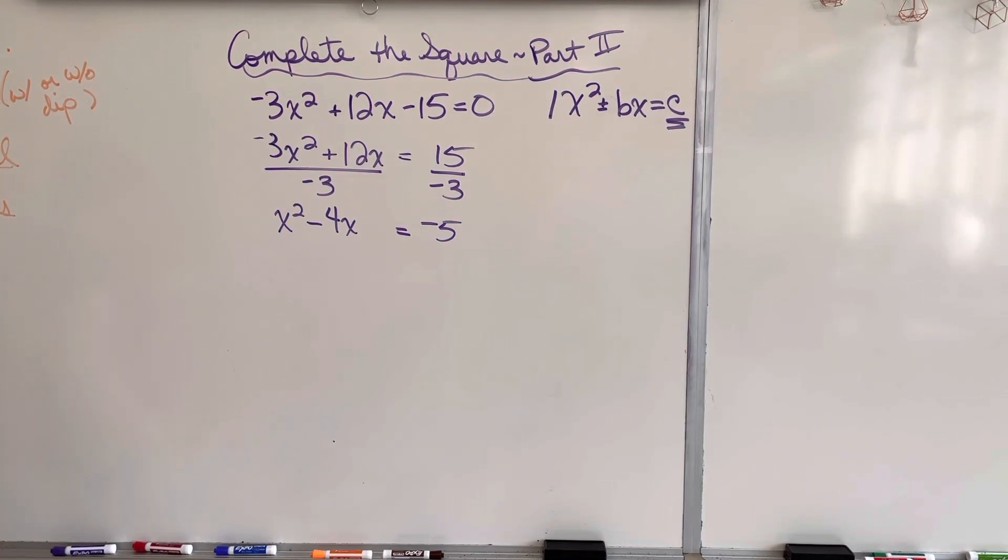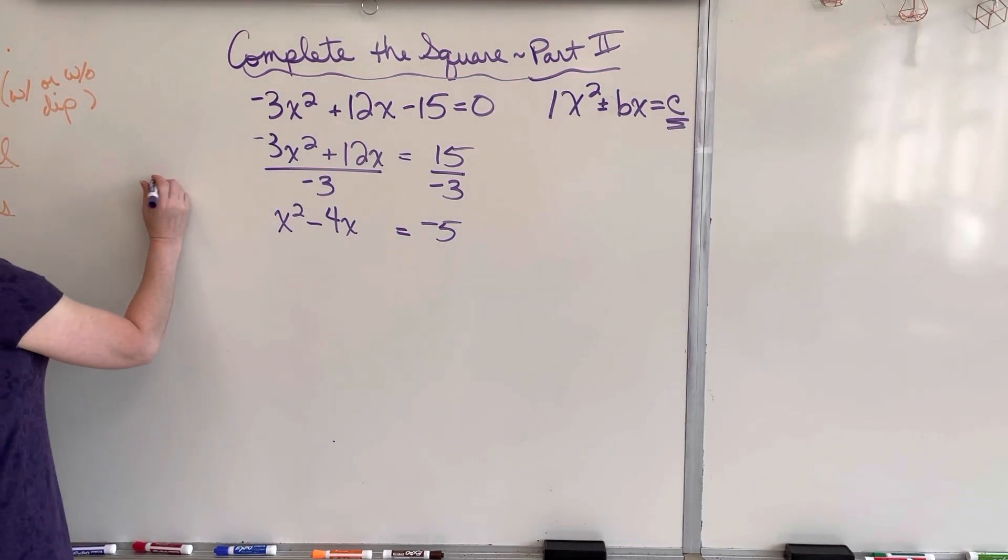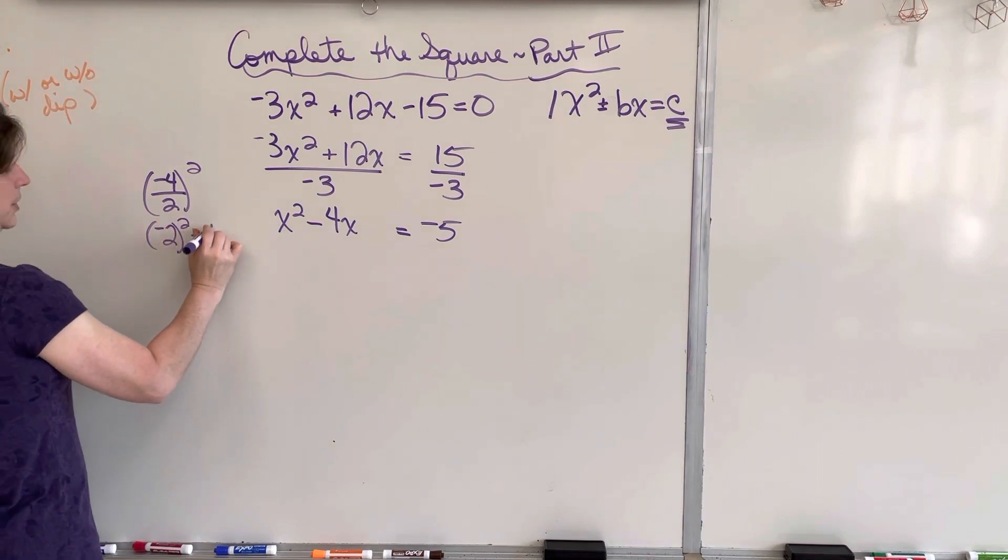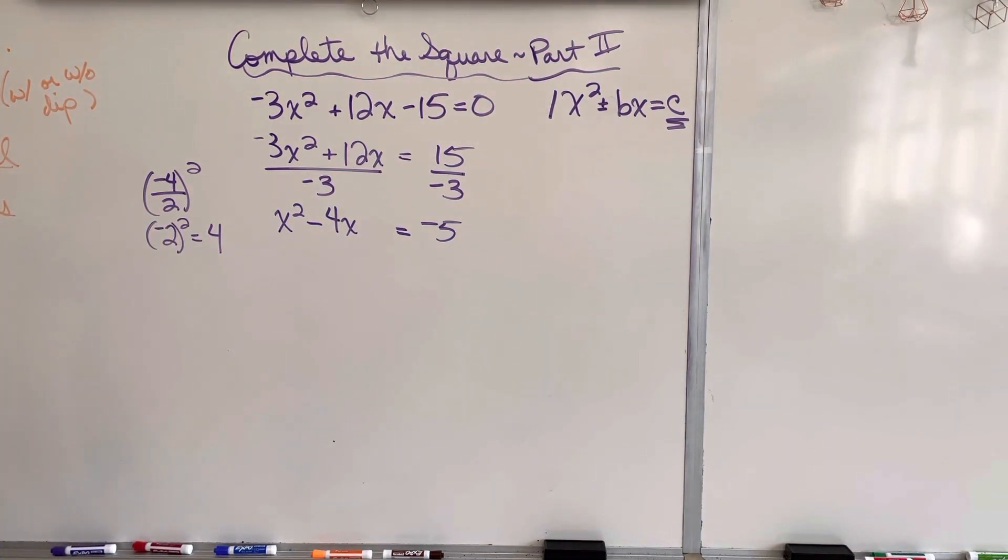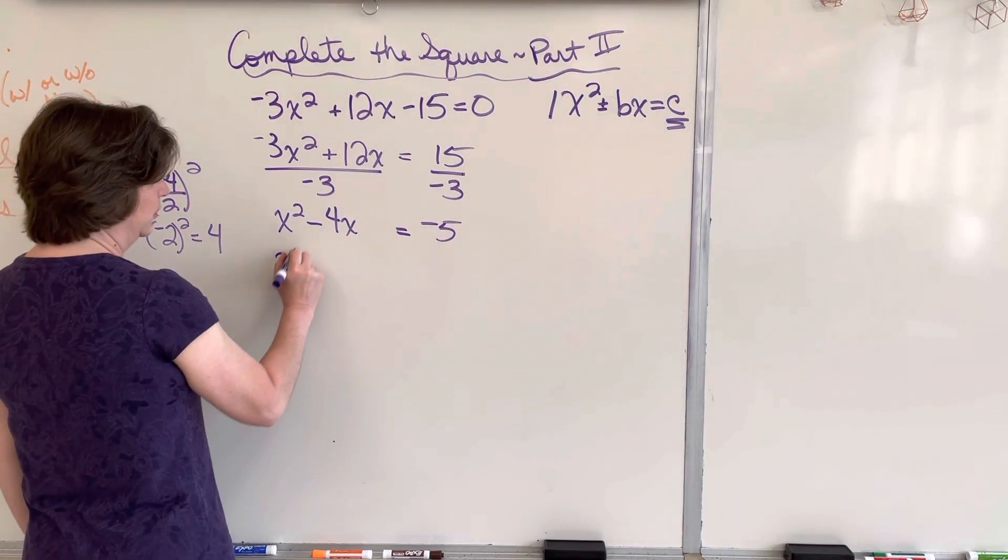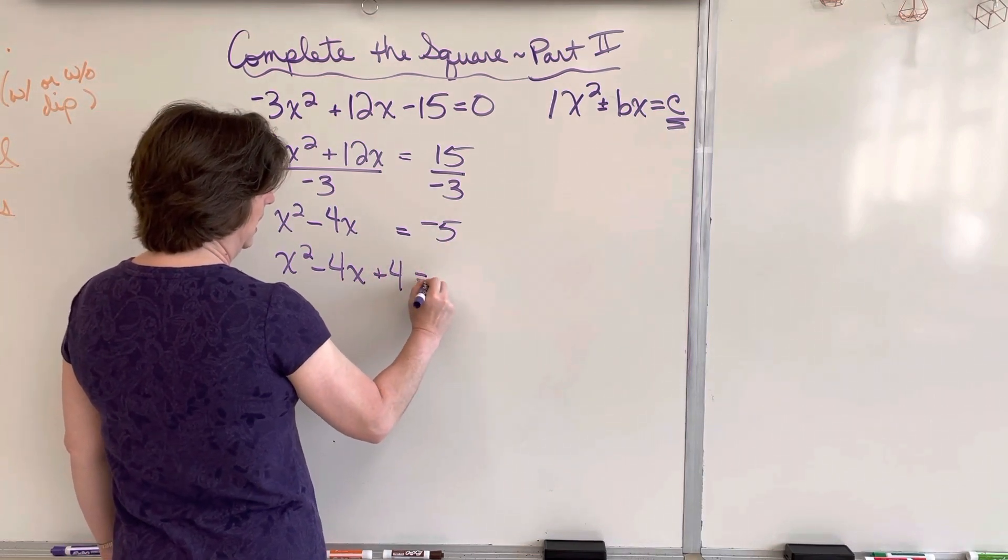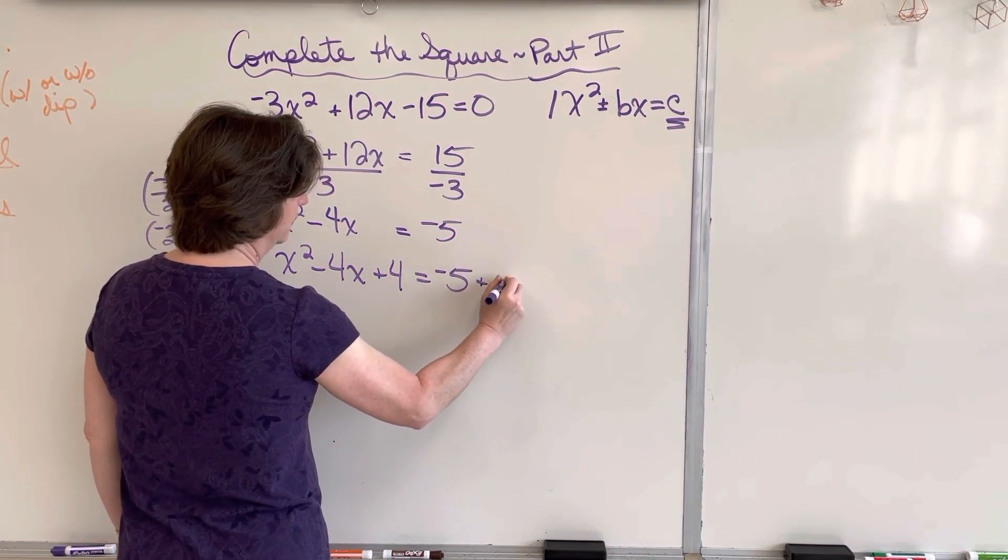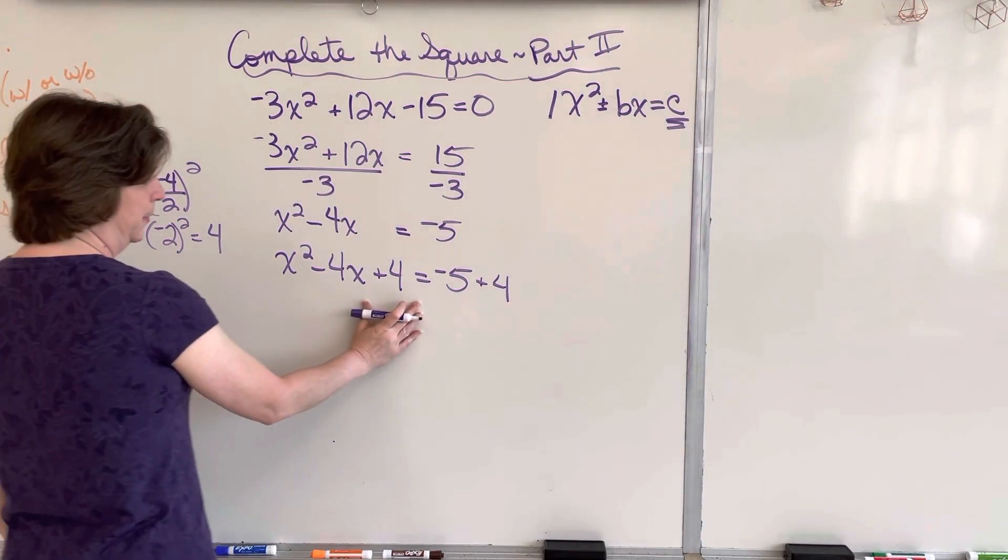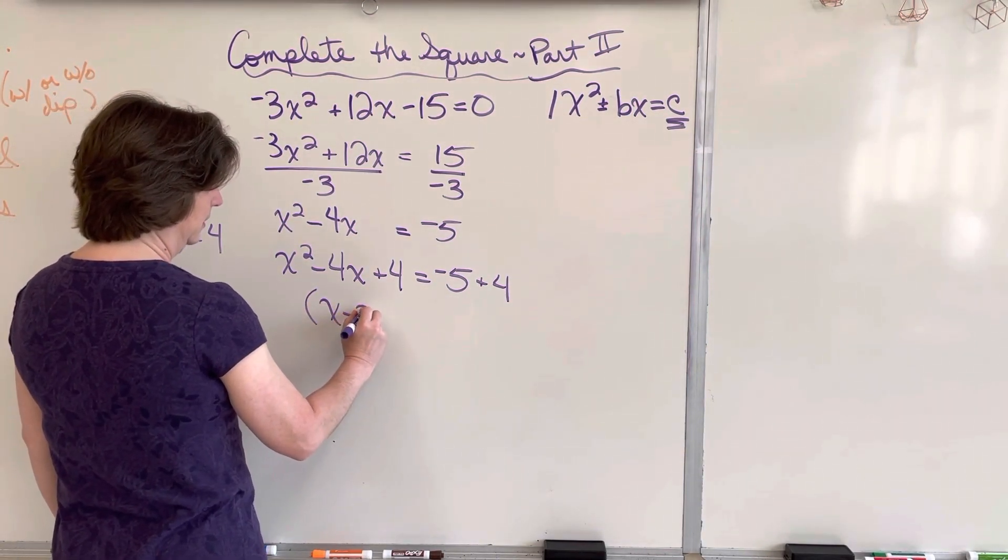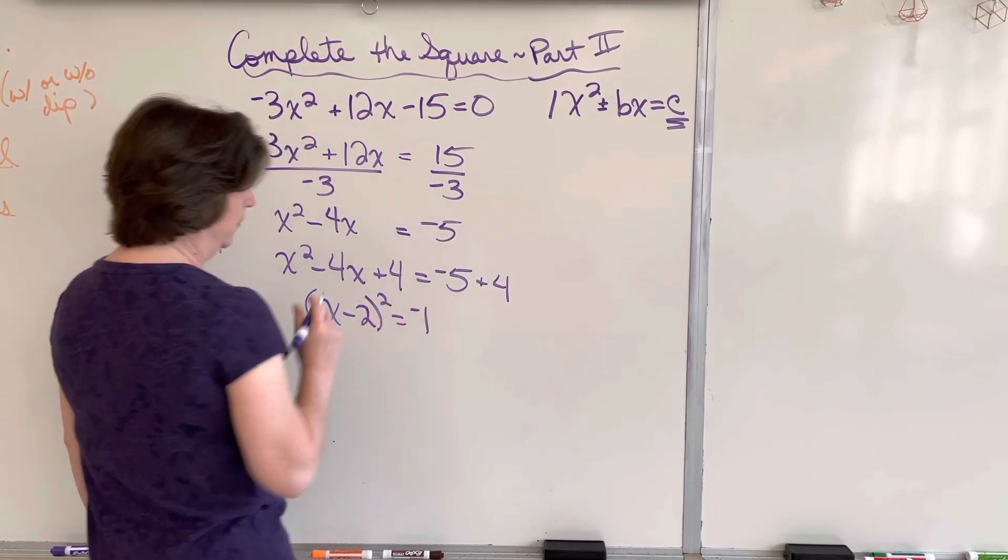Next, we have to find b over 2 squared. So b is negative 4 over 2 squared, which is negative 2 squared, which is a positive 4. So we're going to say x squared minus 4x plus 4 equals negative 5 plus 4. Remember, that's how we end up with a perfect square trinomial.